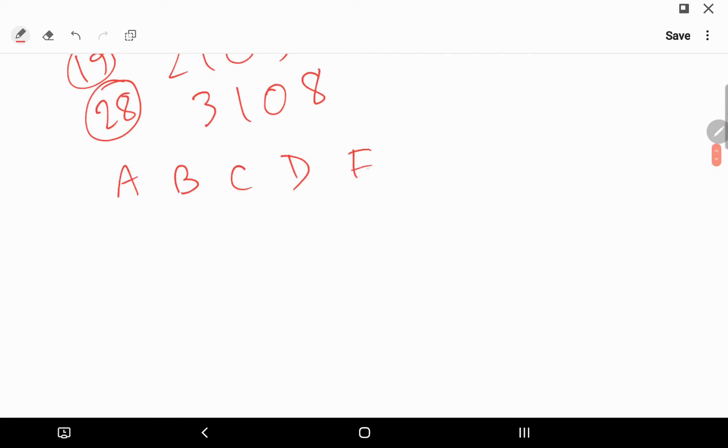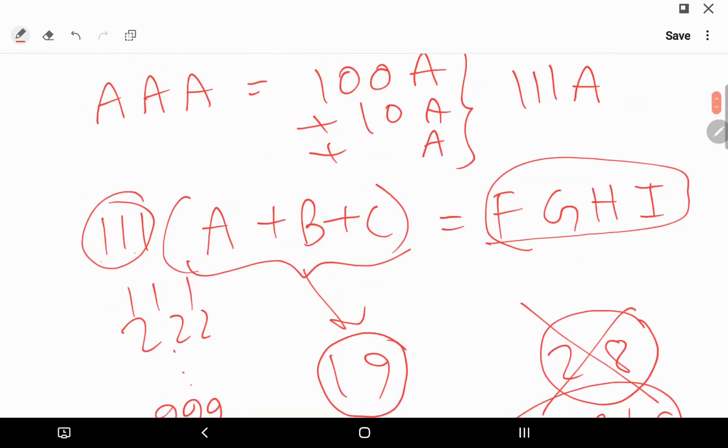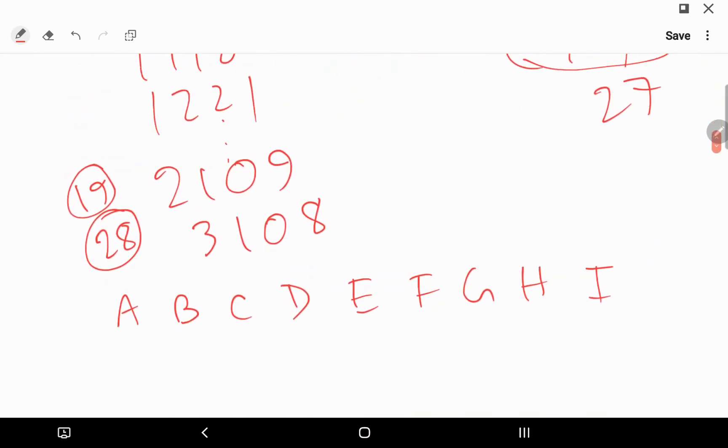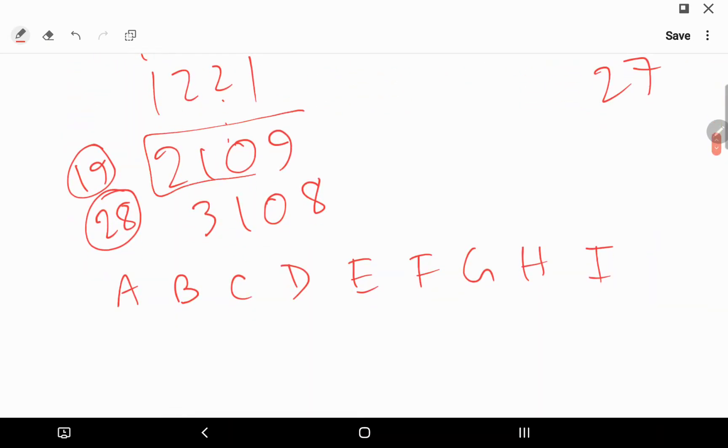A, B, C, D, E, F, G, H, I... E is missing? No, yes, E is there. So I know that FGHI must be 2109.